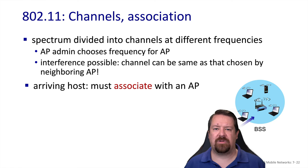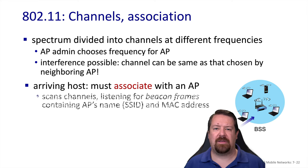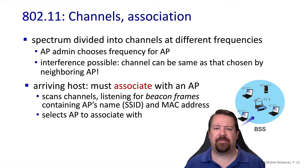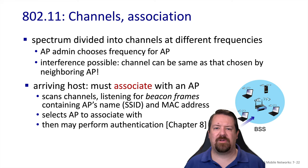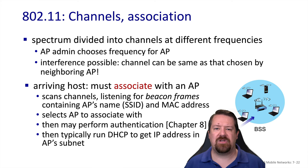When a new host arrives, it goes through an association process with a particular access point. To begin, the host scans through the available channels listening for beacon frames, which are sent periodically by all 802.11 access points. The beacon frame contains both the SSID, which may be shared across multiple access points, and the access point's MAC address, which is used to differentiate one access point from another. Based on the beacon frames it hears, it chooses which access point to associate with. The specification also includes various forms of authentication, which may be required before association completes. Once associated, the host can use DHCP to get an IP address on the subnet.